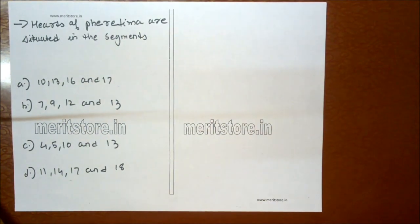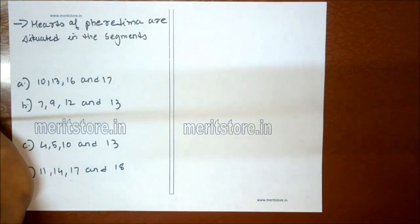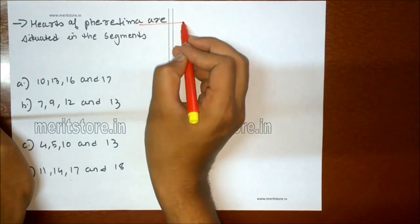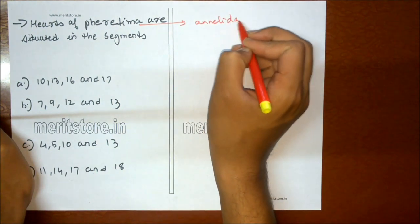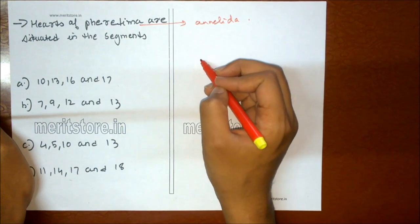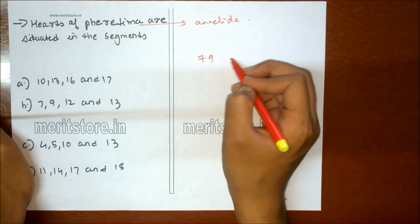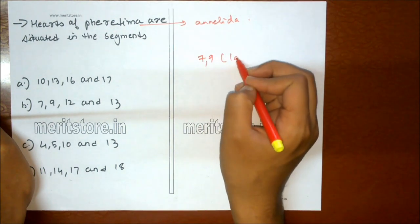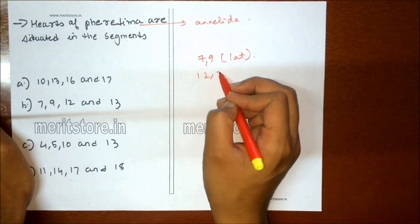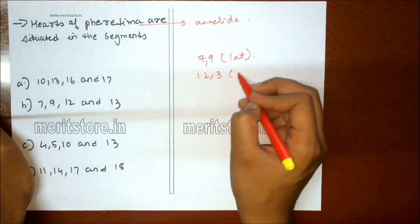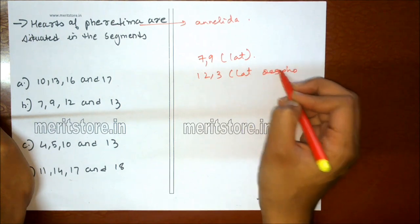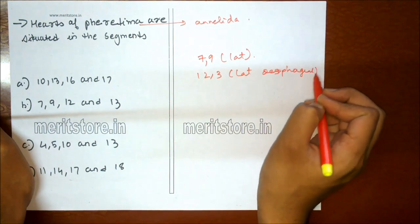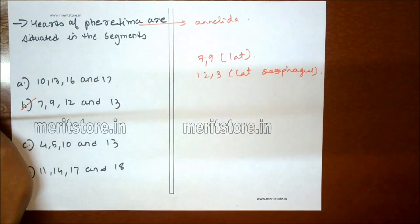Hearts of Pheretima are situated in which segments? The hearts of Pheretima — the earthworm, which belongs to phylum Annelida — are situated in segments 7 and 9, which are lateral hearts, and in segments 12 and 13, which are lateral esophageal hearts. So option B is the correct answer.